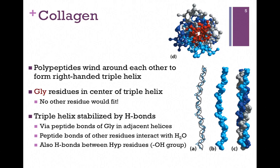The triple helix is further stabilized by hydrogen bonds. The peptide bonds of the glycine residues are able to hydrogen bond between helices — the carbonyl group of glycine in one chain with the amine group of the peptide bond in an adjacent chain. The peptide bonds of the other residues can't hydrogen bond together because of the geometry of the arrangement, but they do interact with water. There are also hydrogen bonds between the side chains of those hydroxyproline residues, which have that OH group.